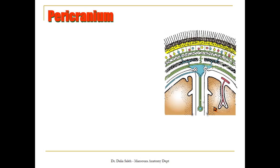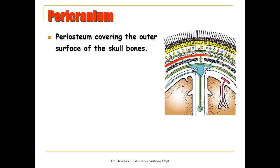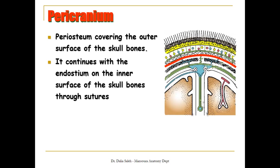The last layer, or the fifth layer, is called the pericranium. The pericranium is equivalent to the periosteum that covers the outer surface of the skull bone. The pericranium is continuous with the endosteum on the inner surface of the skull bone through the sutures.